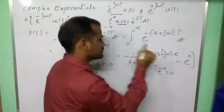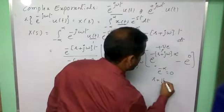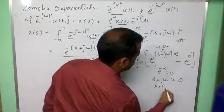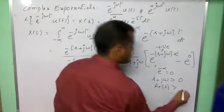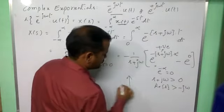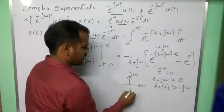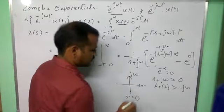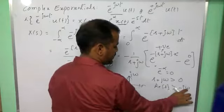So that this s + jω must be positive quantity, so that s + jω is greater than 0, or real part of s greater than minus jω. But in the s-plane if you observe sigma + jω on the imaginary axis, sigma value is 0.